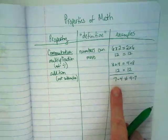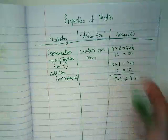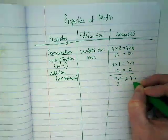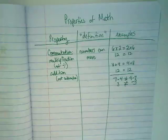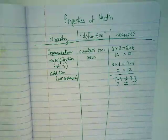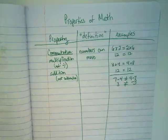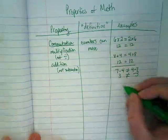7-4 equals 3, but 4-7 equals negative 3. They're opposites of each other, equal distance from 0, but they don't equal each other. So it does not work with subtraction.